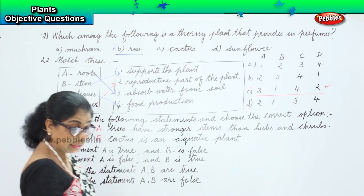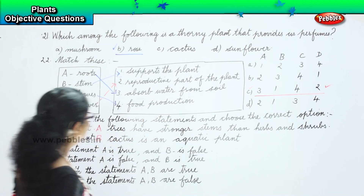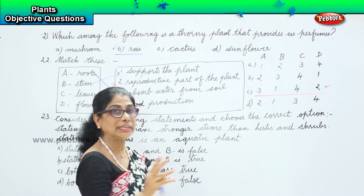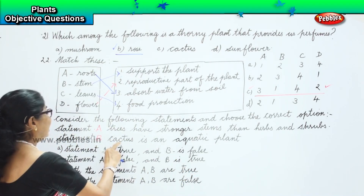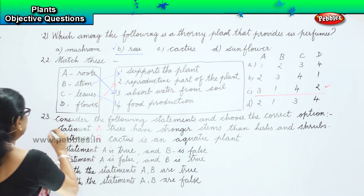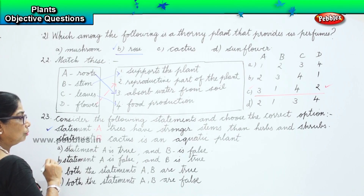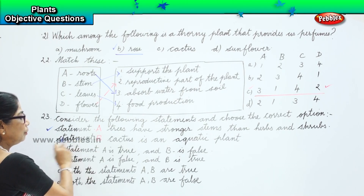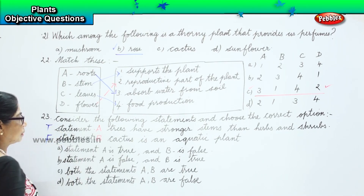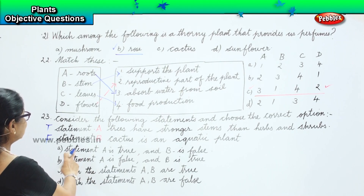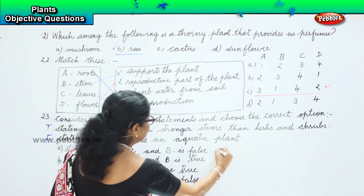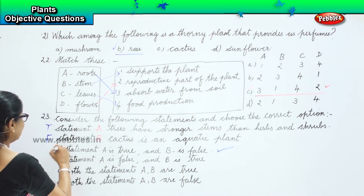Now let us choose which is correct. Trees have stronger stems than herbs and shrubs — is that correct? Yes. Cactus is an aquatic plant? No. So the first statement is true and the second one is false. Therefore, statement A is true and statement B is false — that is the correct answer.